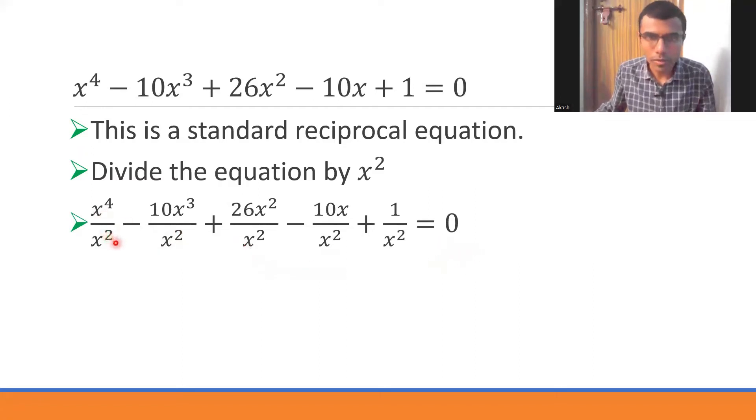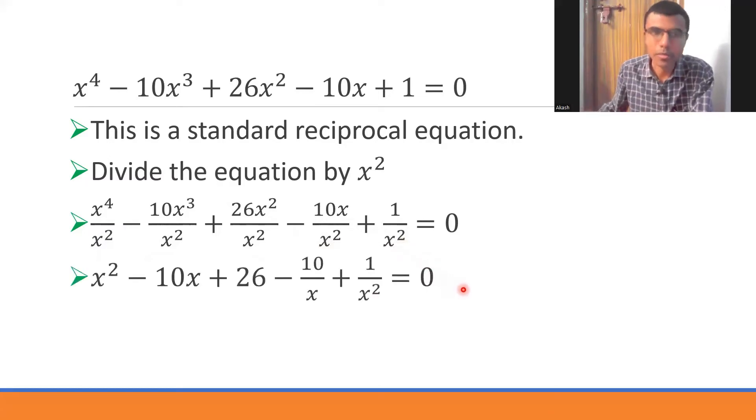Now x⁴/x² would be x². You guys remember right, aᵐ/aⁿ is aᵐ⁻ⁿ. So this would be x to the power 4-2 which is x². Here I will be left out with -10x + 26 - the x² cancels. One x and here 1/x would remain, and plus 1/x² would be as it is. You can observe it.